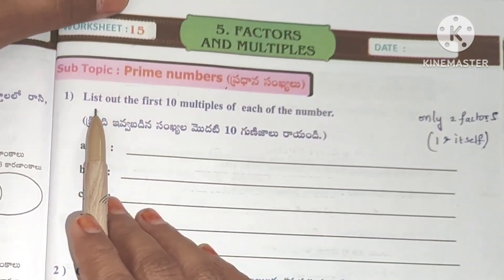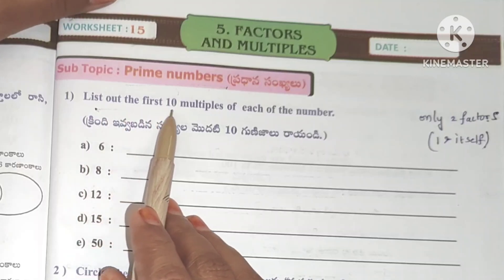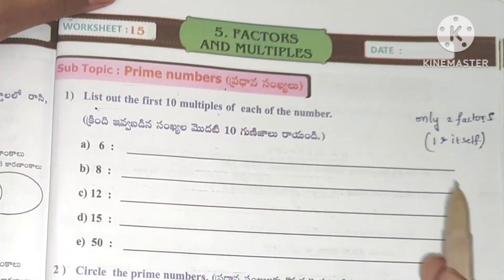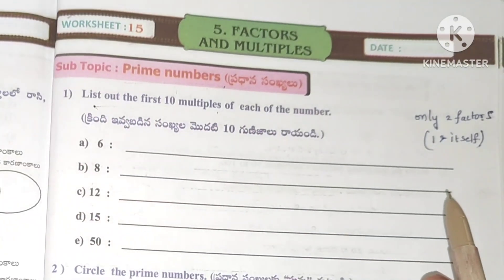Here, the first question: list out the first ten multiples of each number.